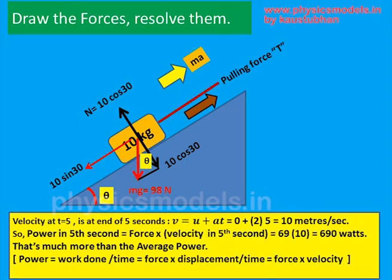The next step is to find the power in the 5th second. The first job is to find the velocity at the 5th second. Using v equals u plus at — u goes away and a into t gives 10 — so the final velocity is 10 meters per second. Then force into velocity gives 69 into 10 equal to 690 watts. To remind ourselves: power equals work done divided by time, work is force into displacement, and if we combine displacement over time it becomes velocity — hence power equals force into velocity.